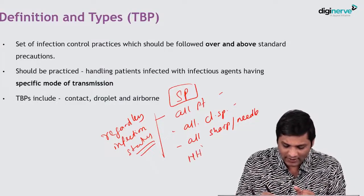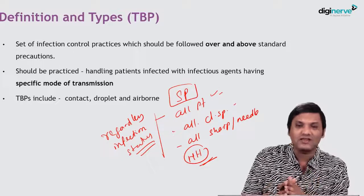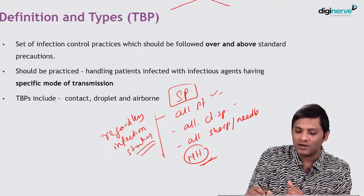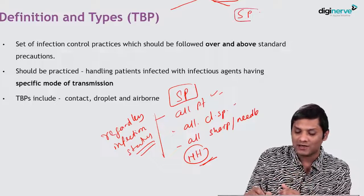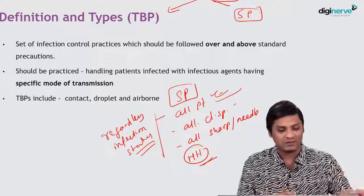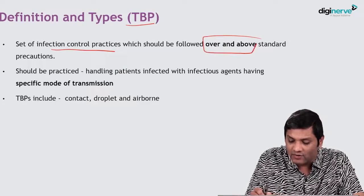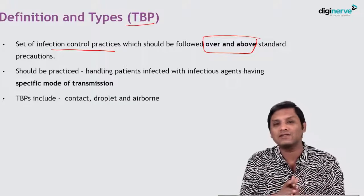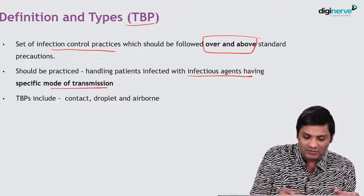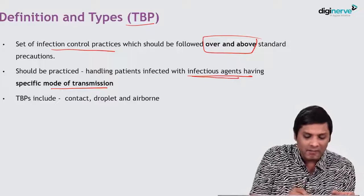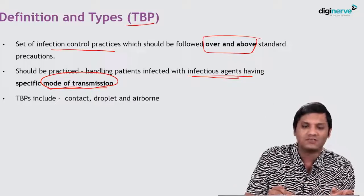The classical example of standard precaution is hand hygiene, which needs to be followed regardless of whether the patient is infectious or not. Transmission-based precautions are another component of infection control measures. They are the set of infection control practices which should be followed over and above standard precautions — additional precautions that depend upon the infectious agent's mode of transmission. Based on the suspected infectious agent and its mode of transmission, certain additional precautions are taken, which are called transmission-based precautions.